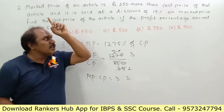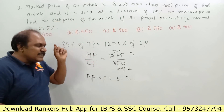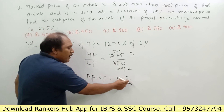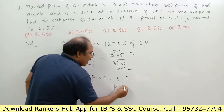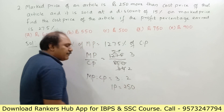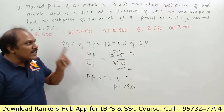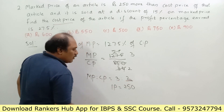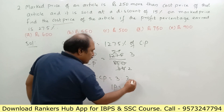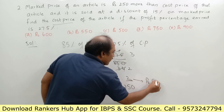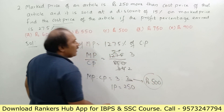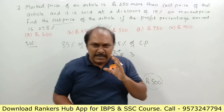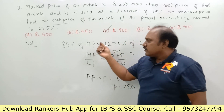The marked price is 250 rupees more than the cost price, meaning the difference between marked price and cost price is 250 rupees, which is one part in the ratio. So one part equals 250 rupees. We are asked to find the cost price, which is two parts. If one part is 250, two parts equals 500. So the cost price of the article is rupees 500.